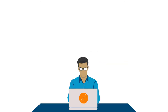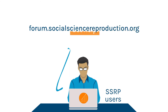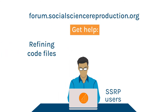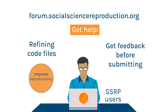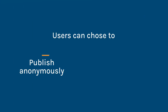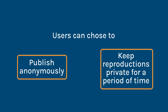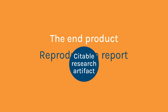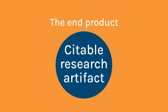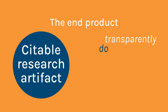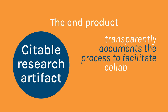For example, users can visit the forum to get help refining code files as part of the improvement stage, or get feedback on their reproductions before submitting. Users can choose to publish anonymously or keep reproductions private for a period of time, if necessary. The end product is a reproduction report, a citable research artifact that transparently documents the process to facilitate collaboration, discussion, and reuse.